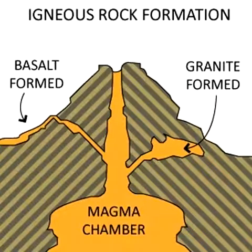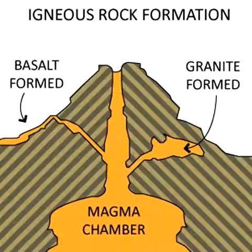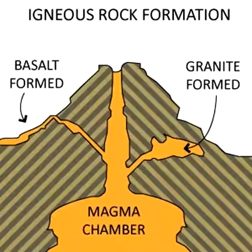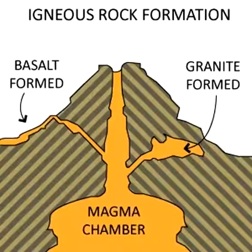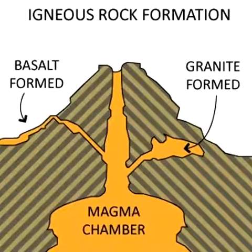Igneous rocks start out as magma under the Earth's crust. Magma is super-heated liquid rock. Once magma is erupted onto the Earth's surface through volcanoes or cracks in the ground, it starts to cool and is called lava.